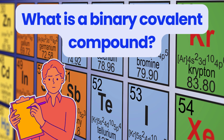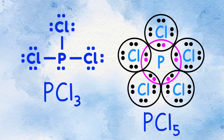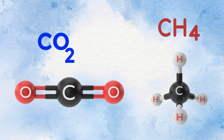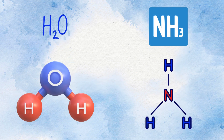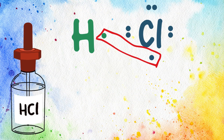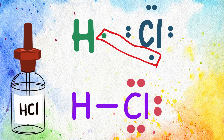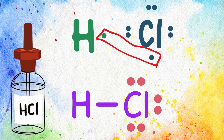What is a binary covalent compound? A binary covalent compound is a chemical compound composed of two different non-metallic atoms that share electrons to form covalent bonds. In HCl, hydrogen and chlorine share a pair of electrons to form a single covalent bond to form the HCl molecule.